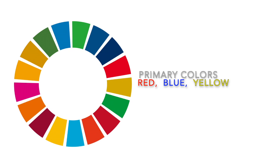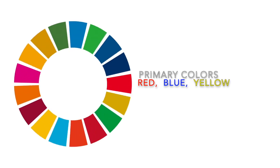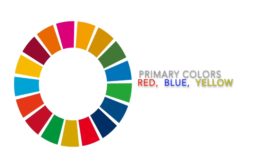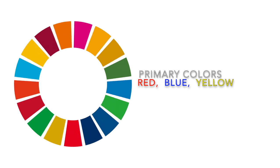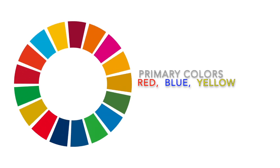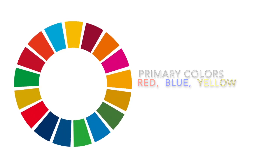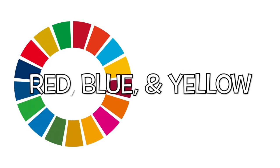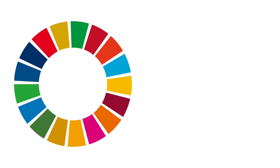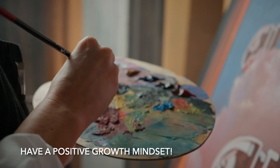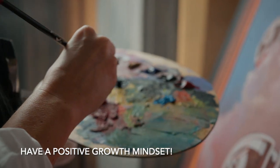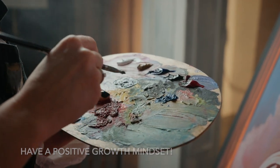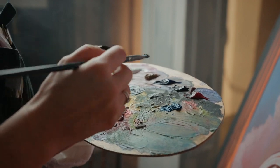Primary colors in art class and painting are different than those of physics and the primary colors of light. When we talk about primary colors in painting, we are talking about the three colors used to mix and make all other colors. These are red, blue, and yellow. Mixing colors is not as easy as it looks — you should be having fun while experimenting, even if you don't get it right the first time.